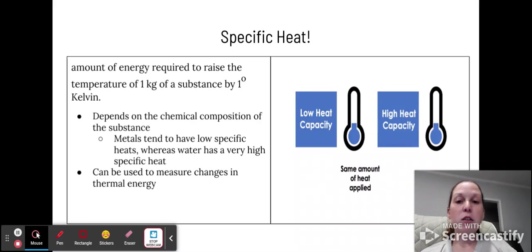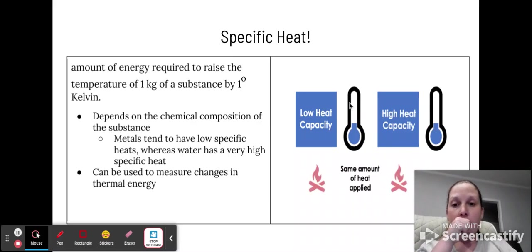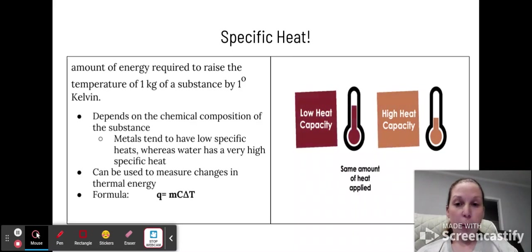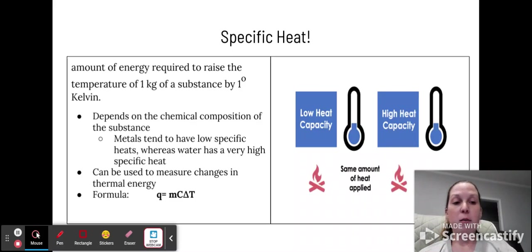Specific heat can be used to measure changes in thermal energy and also used to identify certain materials. And you do that through this formula, which is Q equals mc delta T. I will go ahead and tell you, you do not actually have to do any physical calculations with this formula, but it is important to know how it's used for specific heat and what the components are.